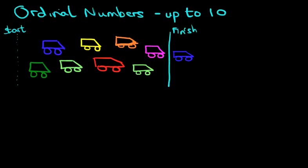I'm just going to cross that out and just change colors with that one. So those are our cars in a race. We've got a start line and we've got a finish line. Now the ordinal numbers, what do they do? They tell us the order of things. The position of things.